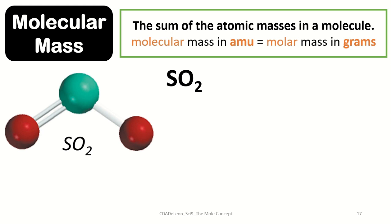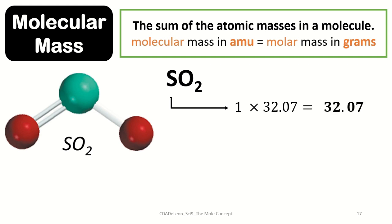So sulfur dioxide has one atom of sulfur, which has an atomic mass of 32.07. We just need to multiply it: 1 times 32.07 is the number itself, so therefore it's 32.07.